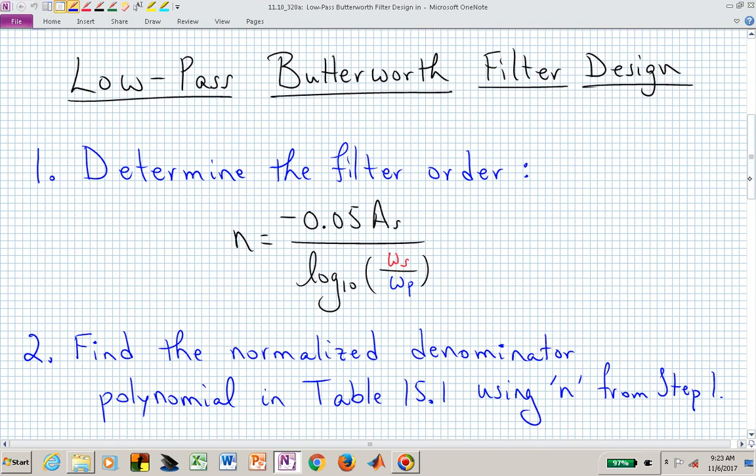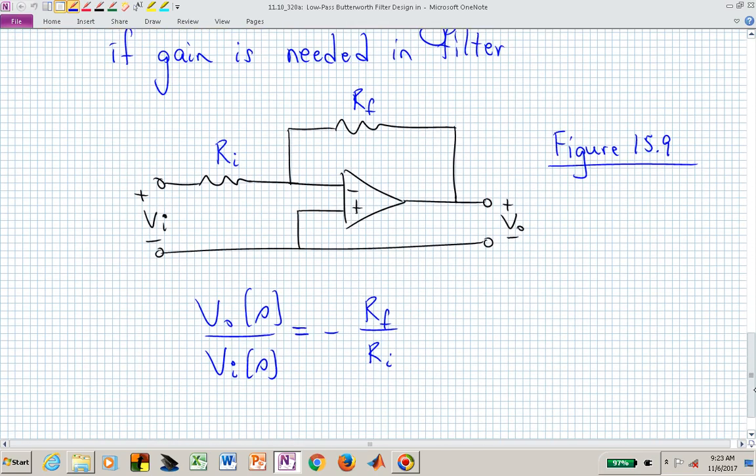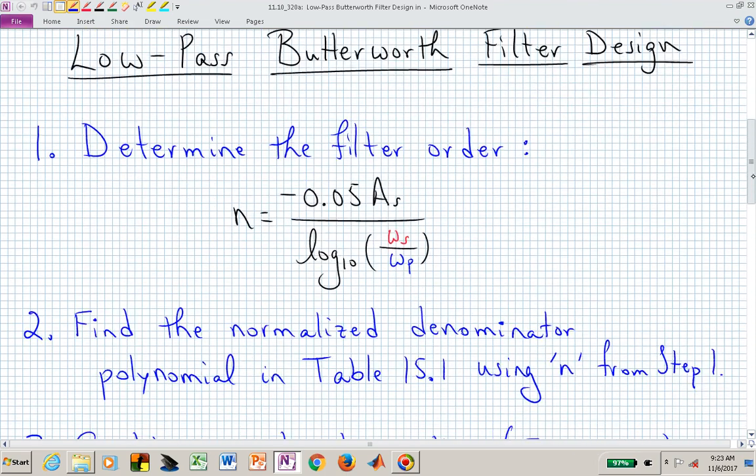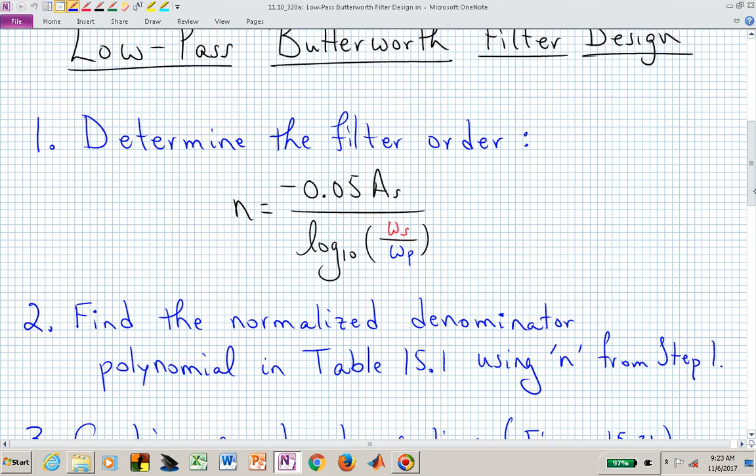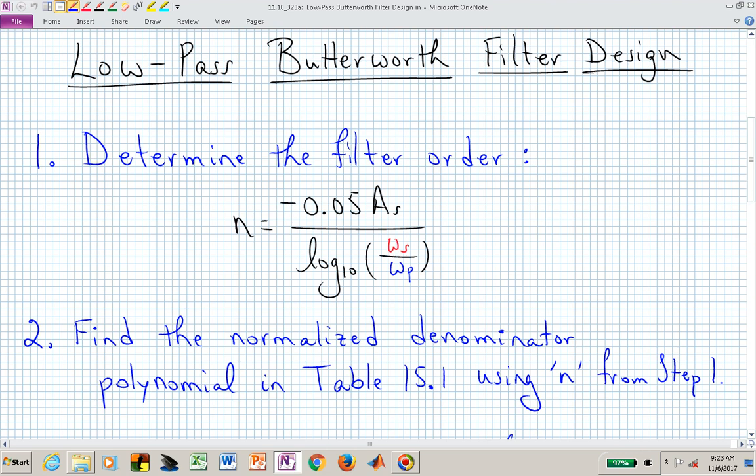Once we have our filter order, then we need to go to table 15.1. You've seen table 15.1 in multiple videos; you have that in the textbook. You find the appropriate row based on N that you just calculated in step number 1. So now you need to find the normalized denominator polynomial using that N. Let's say N equal to 3.